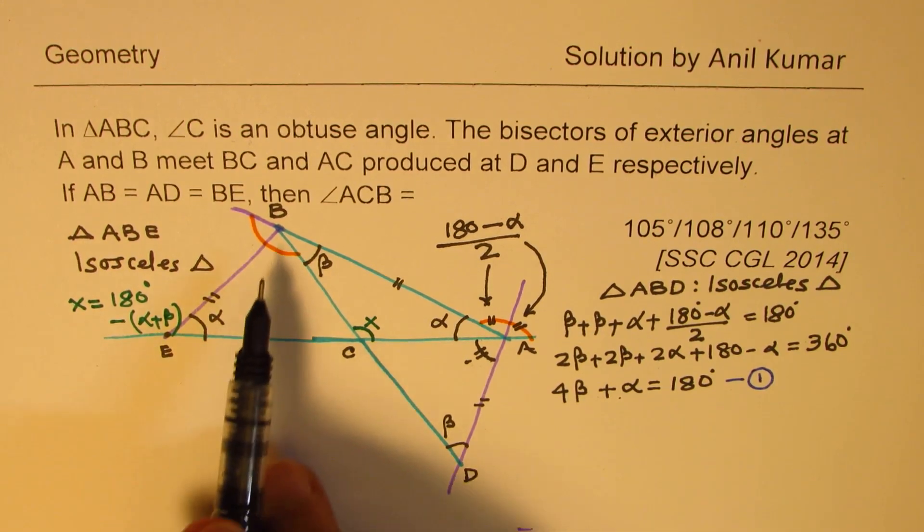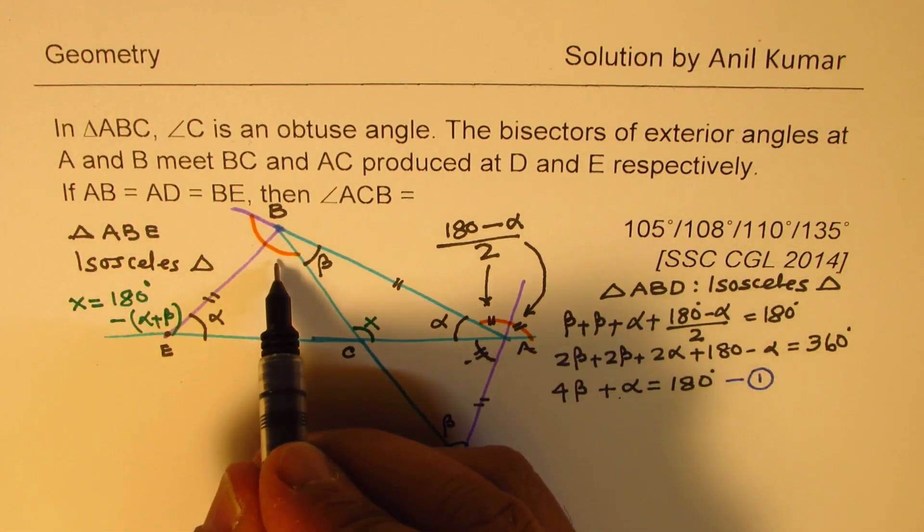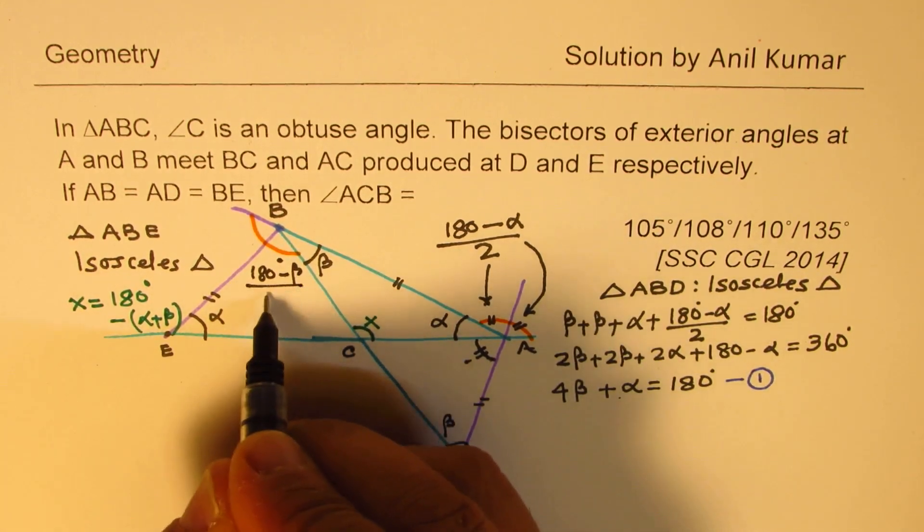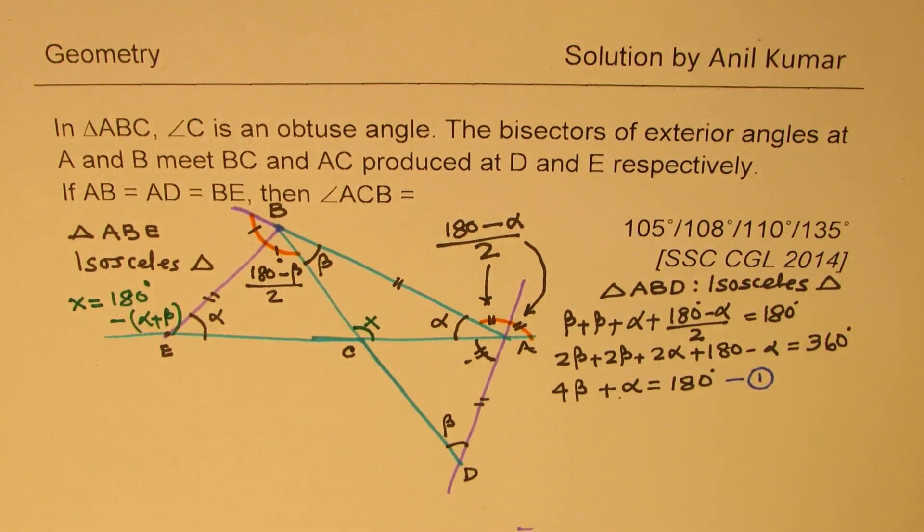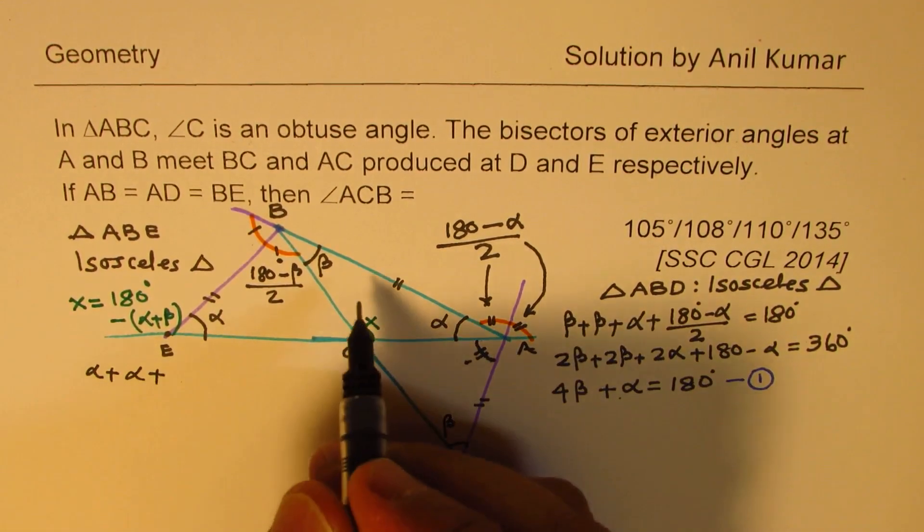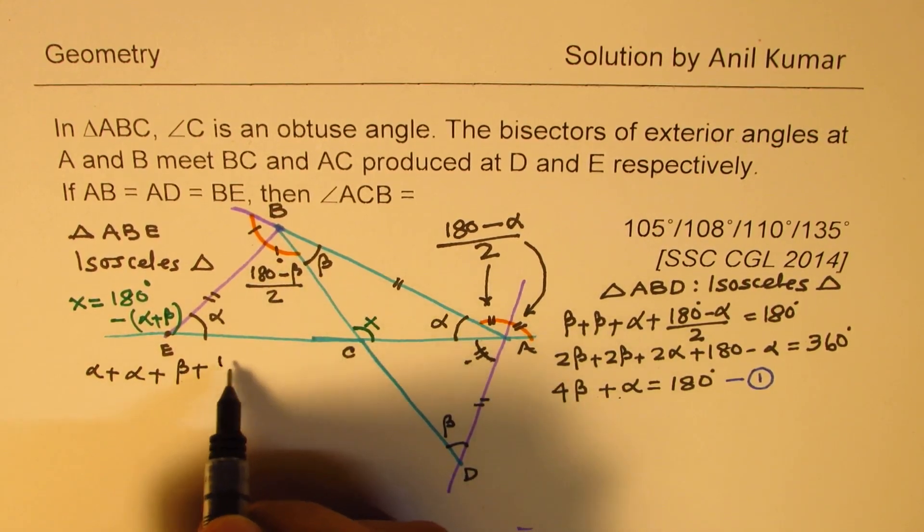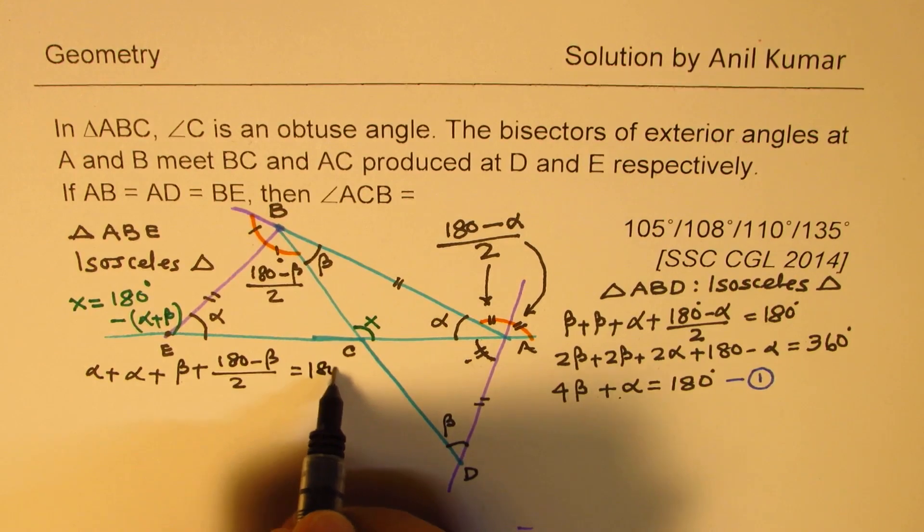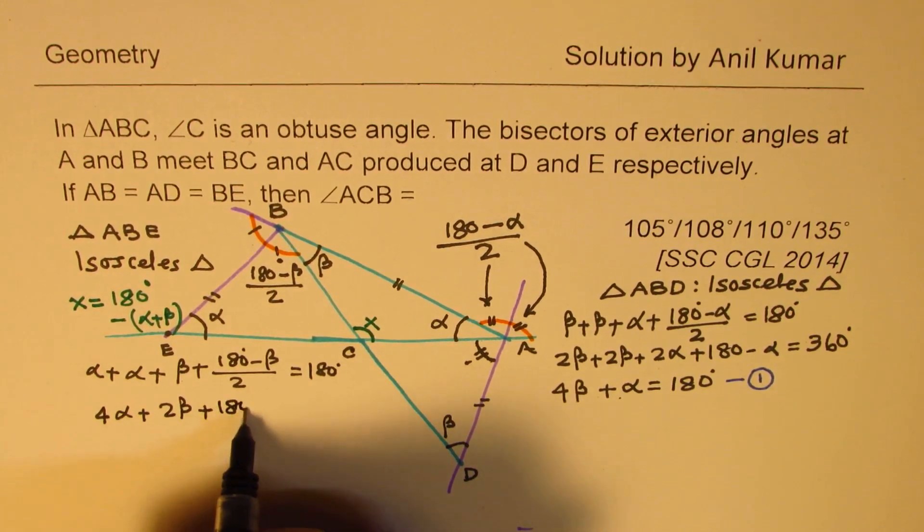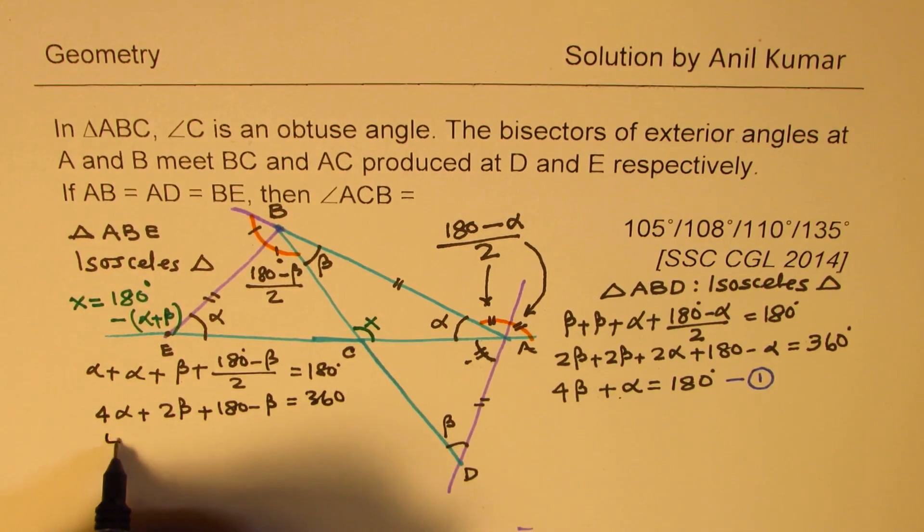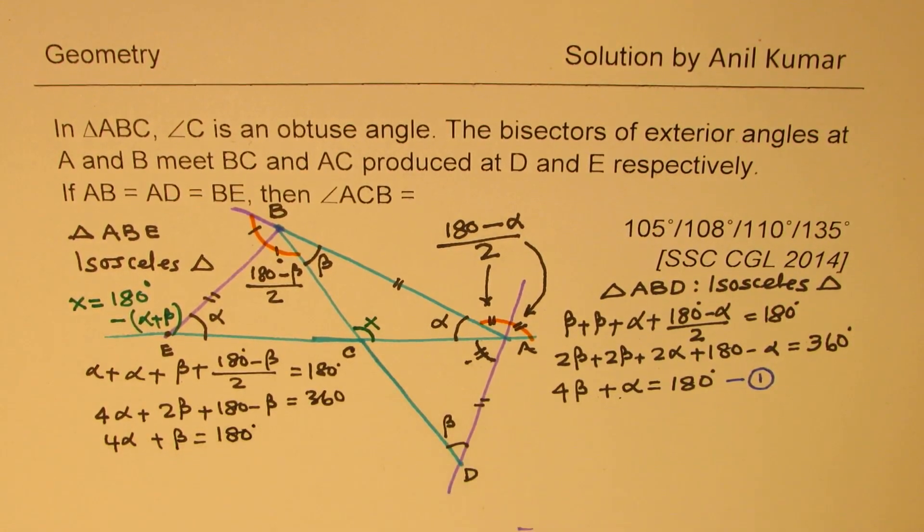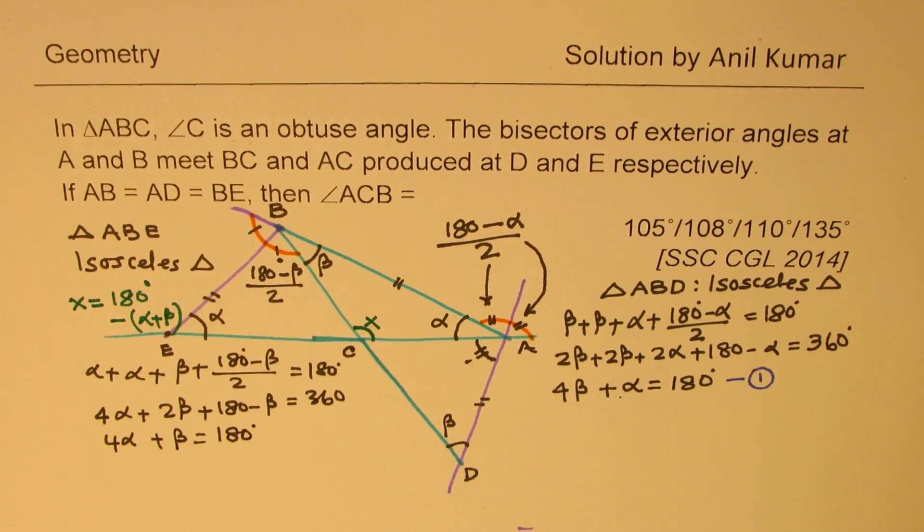Now, let's work on the other triangle, this big one. Here, again, what should be this angle? This angle here is 180 minus beta, divided by two. Half. Since these two are equal. That makes sense. So let's add these angles in this triangle. So we have alpha plus alpha plus beta plus this, which is 180 minus beta by 2 is also equal to 180 degrees. So that gives you 4 alpha plus 2 beta plus 180 minus beta equals to 360. Or 4 alpha, 2 beta minus beta is beta equals to 360 minus 180, which is 180 degrees. We'll call this as our equation number two.